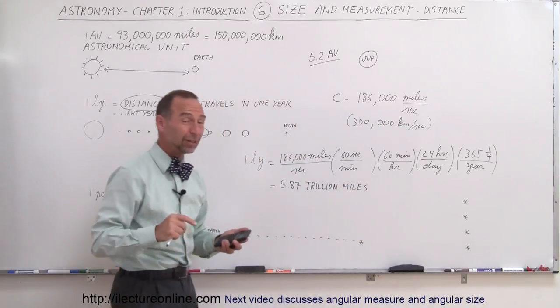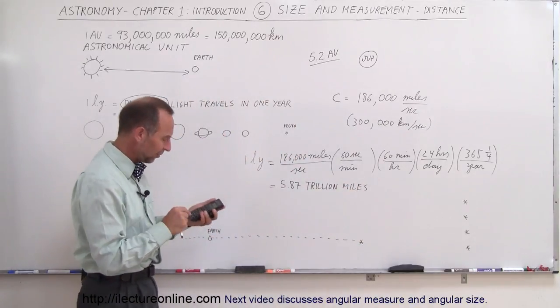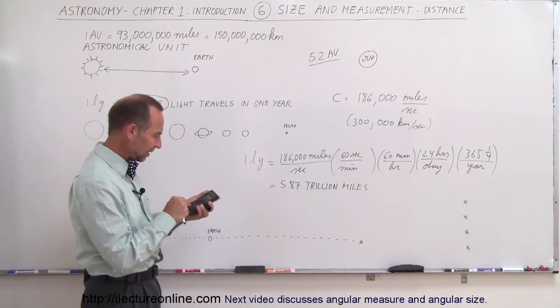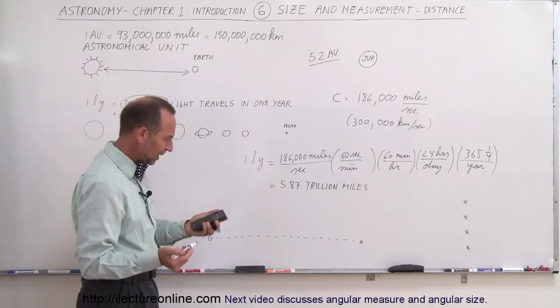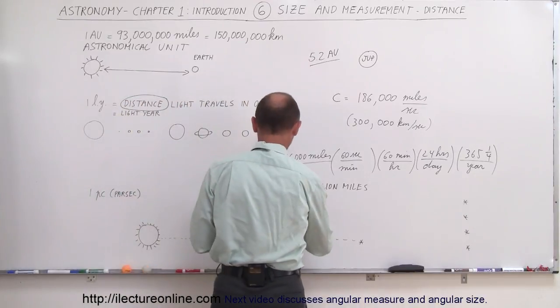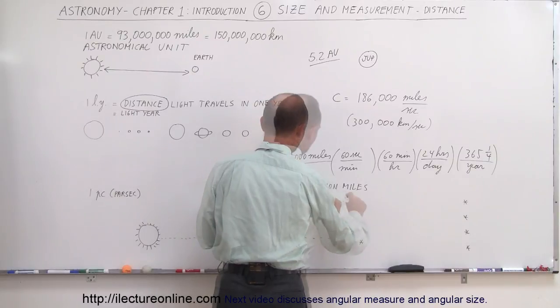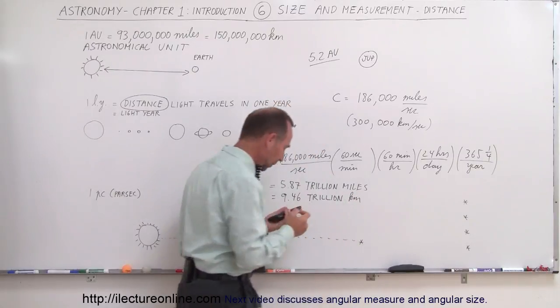Now if we do that with kilometers instead of miles, what do we get? Well divide by 186 times 300, we get 9.46. So this is 9.46 trillion kilometers. Wow, that's quite a distance.